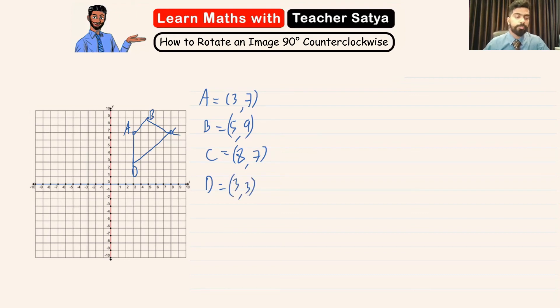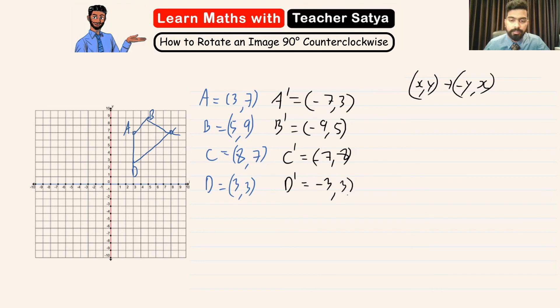Now from the previous question if you remember, our X, Y will change to minus Y and X. So this will be our new ordered pair. So our A prime will be minus 7 and 3. Our B prime will be minus 9 and 5. Our C prime will be minus 7 and 8. And our D prime will be negative 3 and 3.